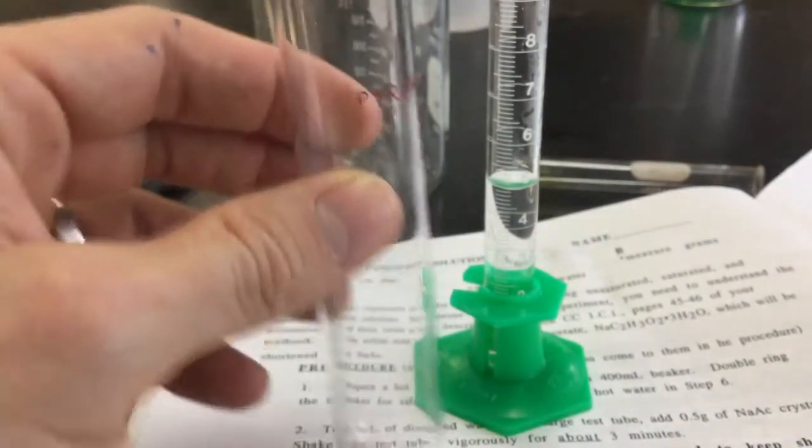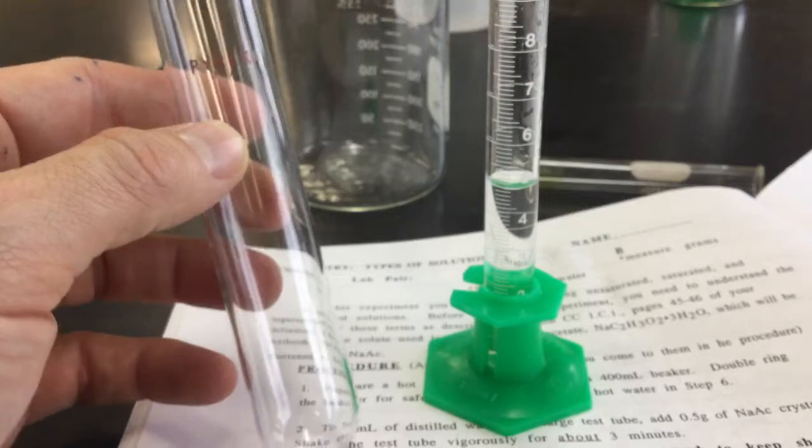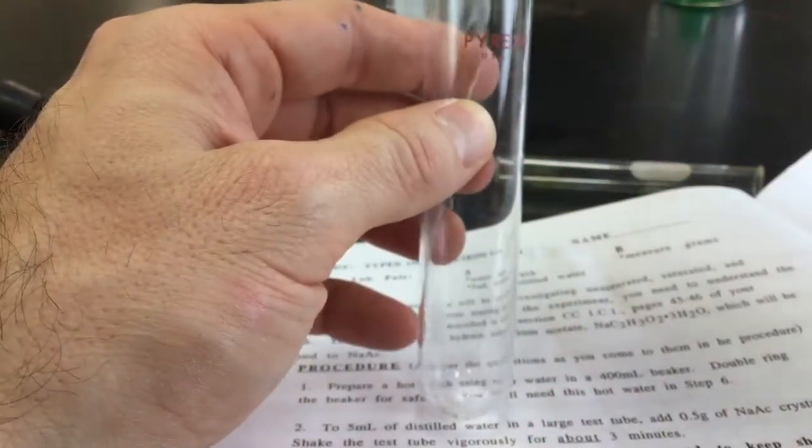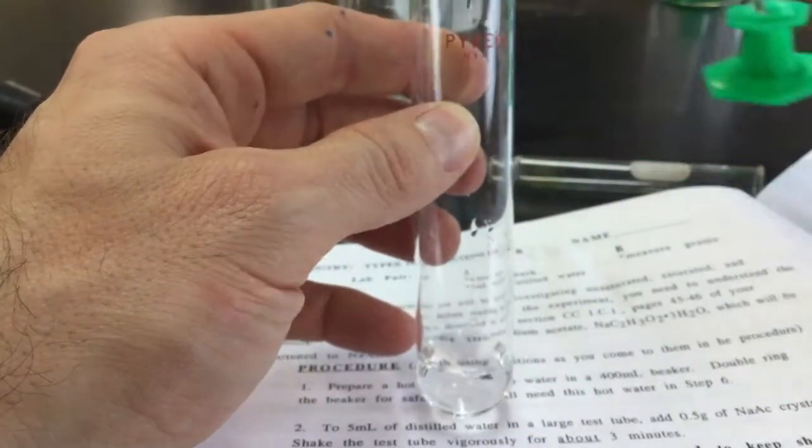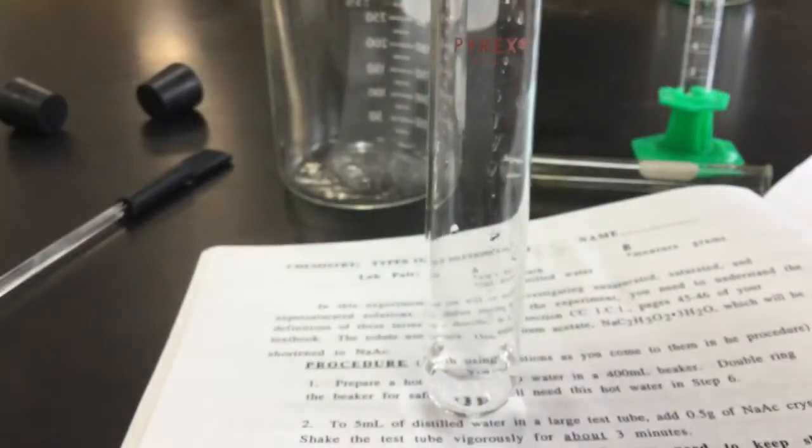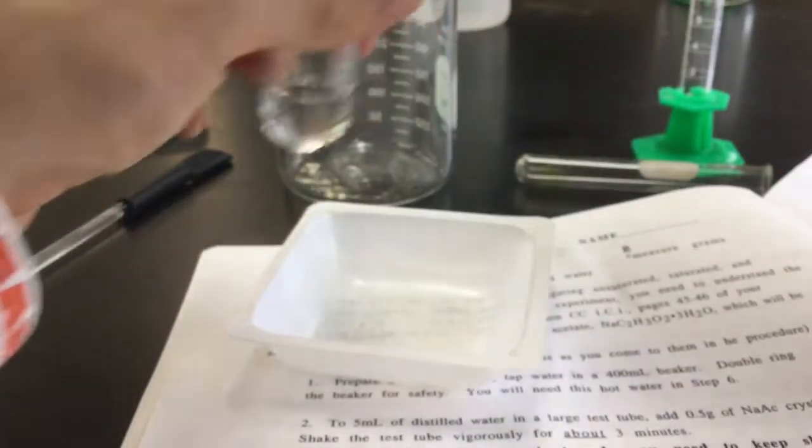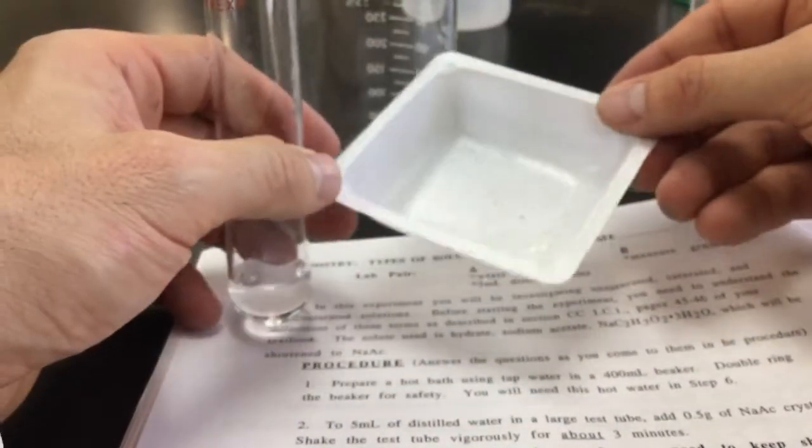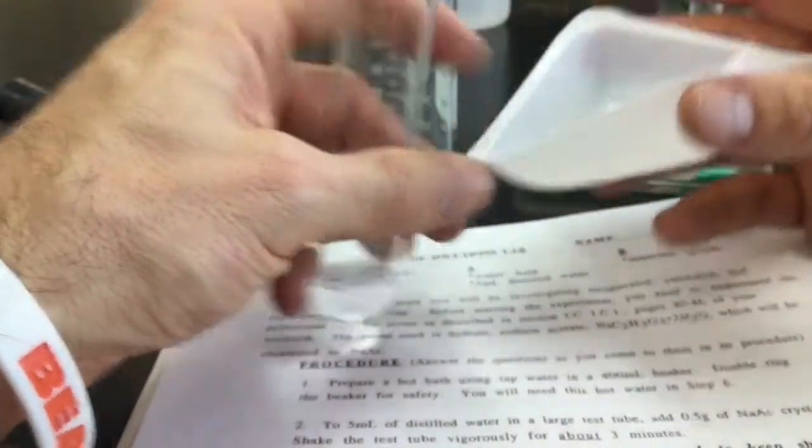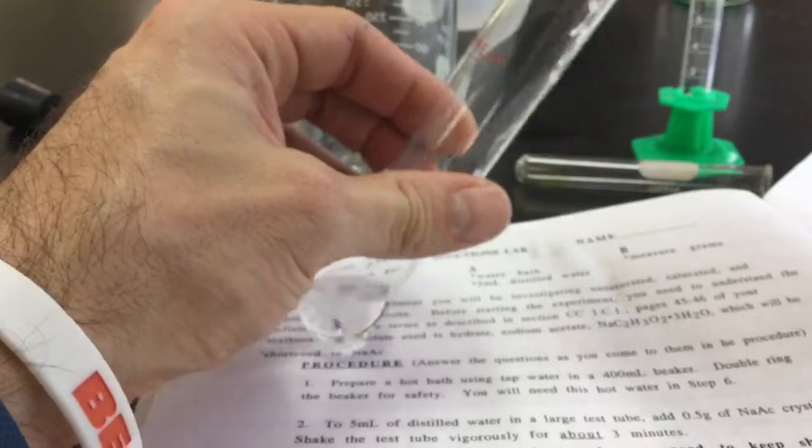Once you do that, you've got this gigantic test tube that you're going to use to put that solvent in. You're supposed to measure out 0.5 grams of the sodium acetate. So I got the weigh boat here. You got the sodium acetate. I'm going to fold it up and enter it into the test tube.